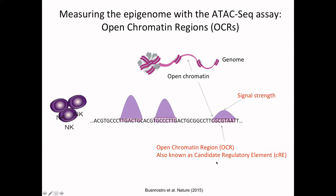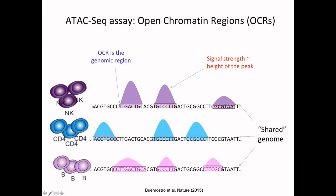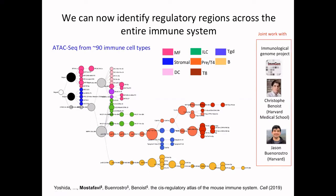A few years ago, the technology was mature enough to apply to maybe a handful of cell types and start comparing their regulatory regions. What's been really cool is that now the technology is mature enough to be applied at very large scale to a really large number of cell types. A nice example of this large-scale experimentation was done by the ImGen consortium, which I had an opportunity to contribute to.